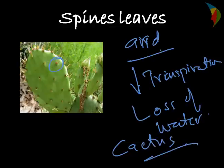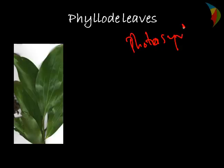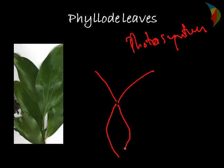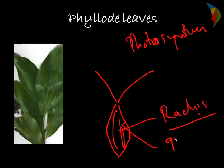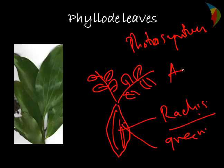The third type of modification is phyllode leaves. Phyllode leaves are basically where the petiole is modified to perform photosynthesis. This happens because the true leaves are small and ephemeral. The petiole is modified and becomes broad and green in color to carry out photosynthesis. This is mostly found in the genus Acacia.